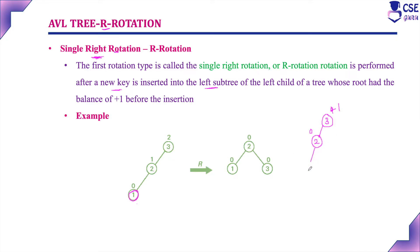Suppose again we are inserting one more node as a left child of left subtree — that is one. In this case, if you check the balance factor: here it is zero, here it is plus one, here it is plus two. Now the tree is unbalanced. Whenever you are inserting a new node as a left subtree of left child and before insertion the root node balance is plus one, after insertion the root node balance is plus two — it is unbalanced. So here you need to implement a single right rotation.